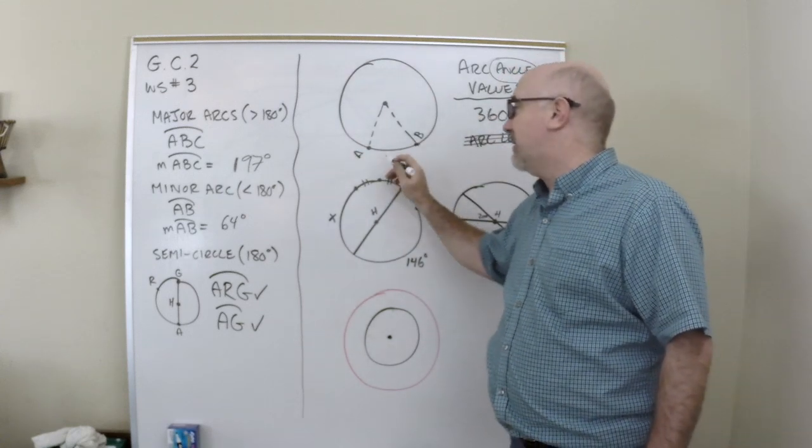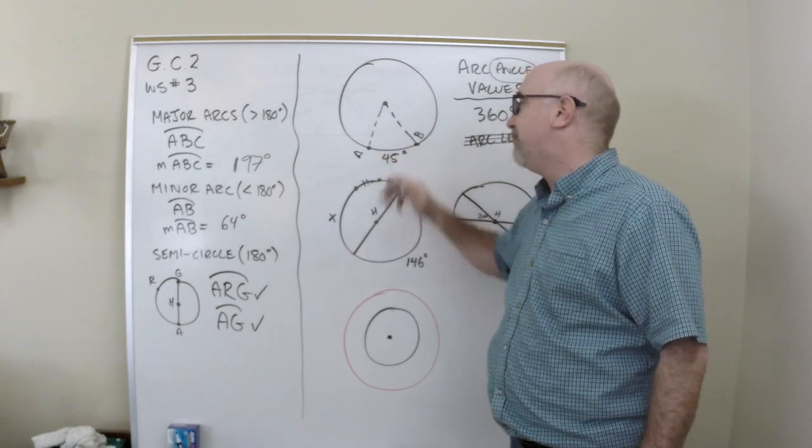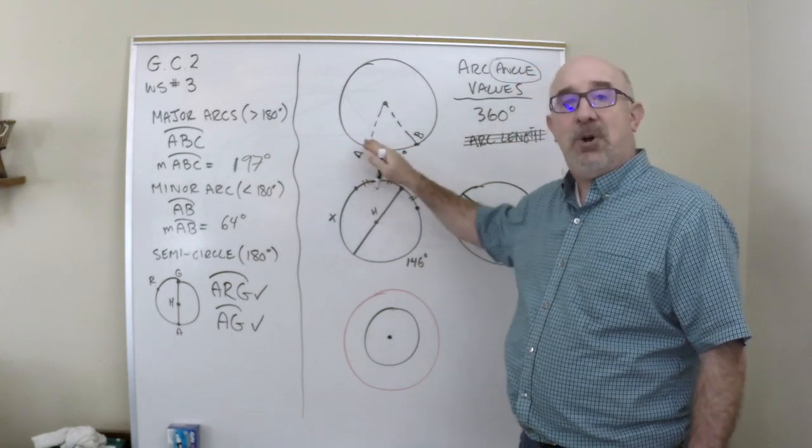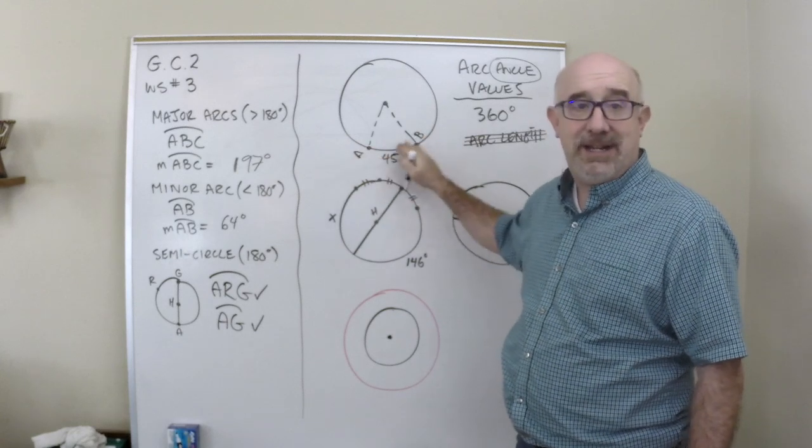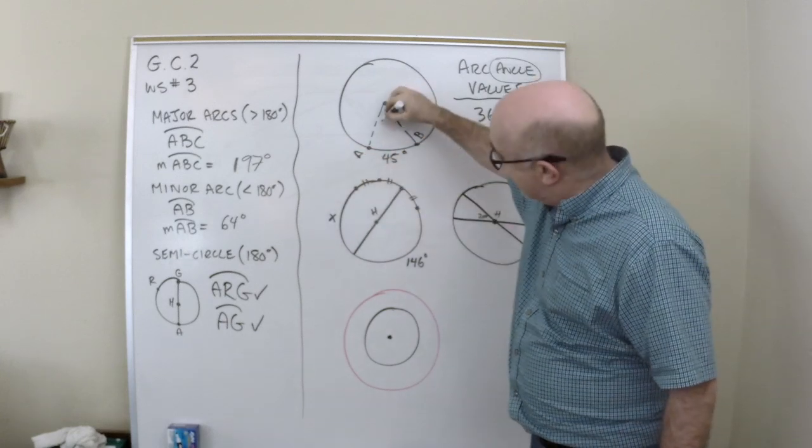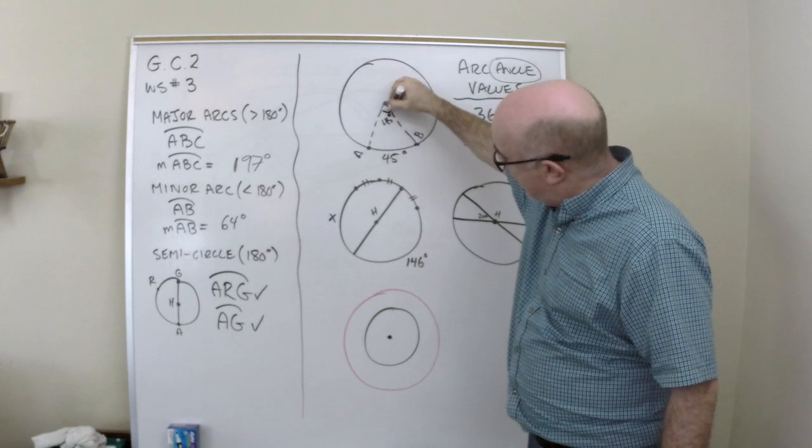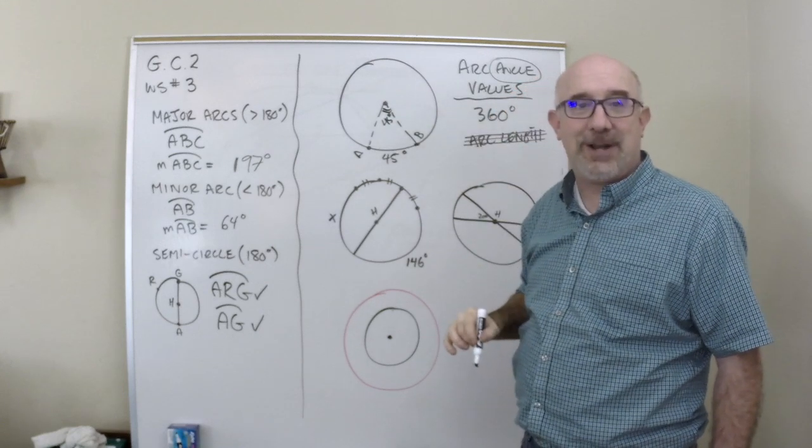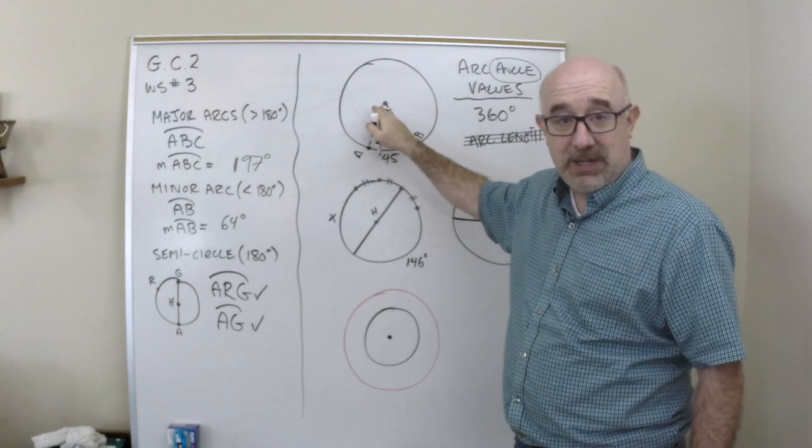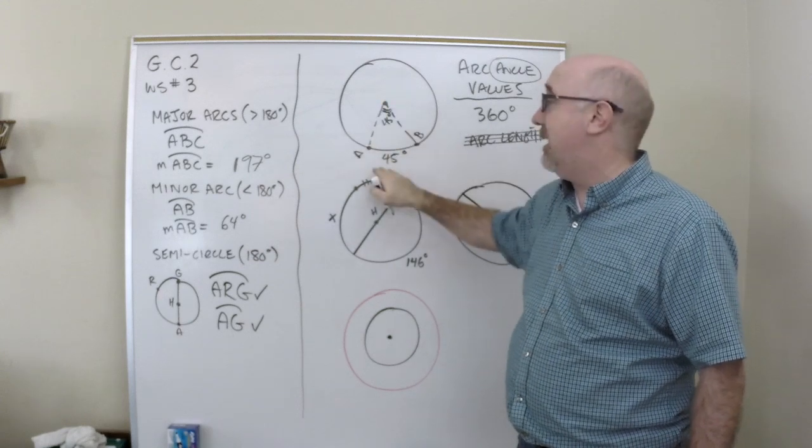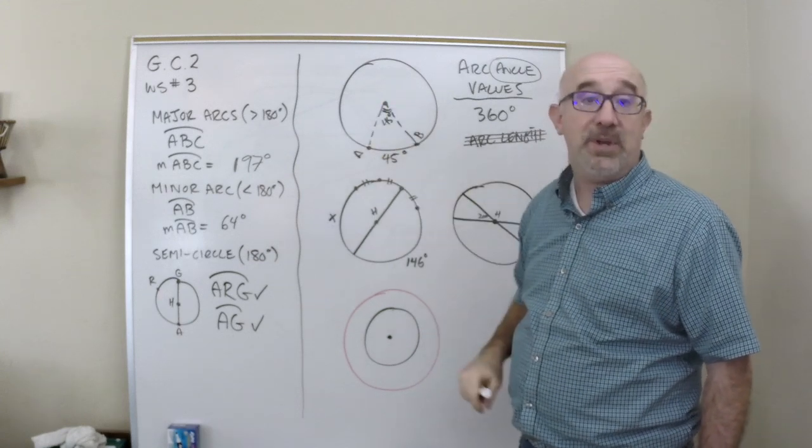The other thing that's important to notice, let's say this is 45 here, that the amount of angle that's being taken out here is exactly the amount of angle happening in here. A direct relationship between the central angle, the angle at the center, and the arc angle that will always match.